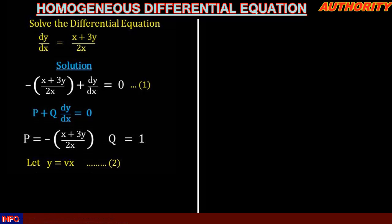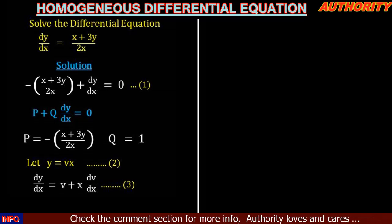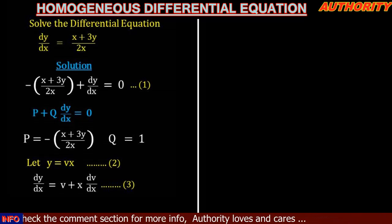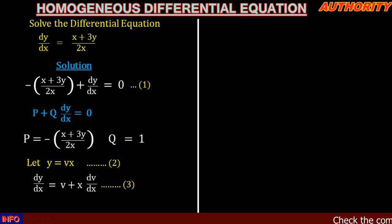Wherever we see y, we are going to replace it with vx. But before we do that, let's differentiate y with respect to x. That means dy/dx is equal to v + x(dv/dx). We differentiate vx with respect to x and get v + x(dv/dx). Let's call this equation 3.